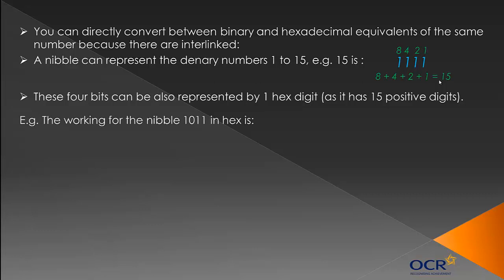These 4 bits, this nibble, can also be represented by 1 hex digit as it has 15 positive digits. So the working for the nibble 1011 in hex is this. We've got our binary number here, and we're working out what this binary number means. 8, 4, 2, 1. 8 plus 2 plus 1—because 4 times 0 is 0—is 11. We take this 11 and straightaway convert it. We know that 11 in hex is B. So 1011 in hex is B.